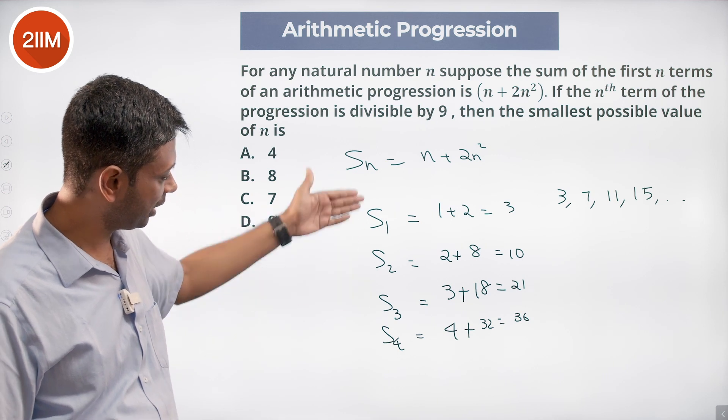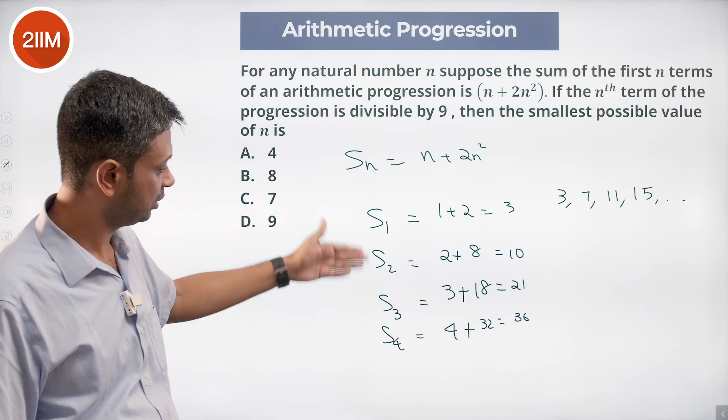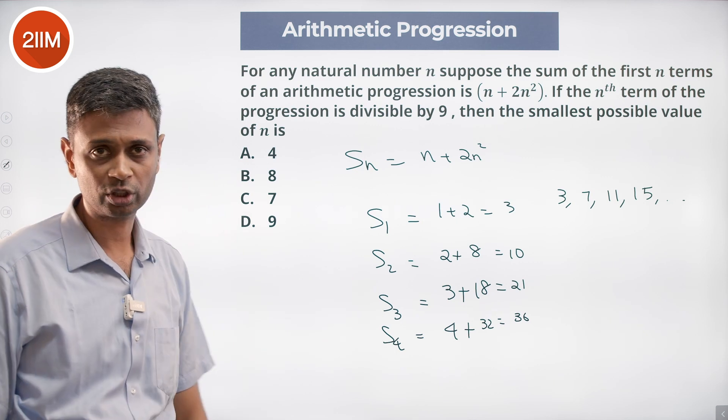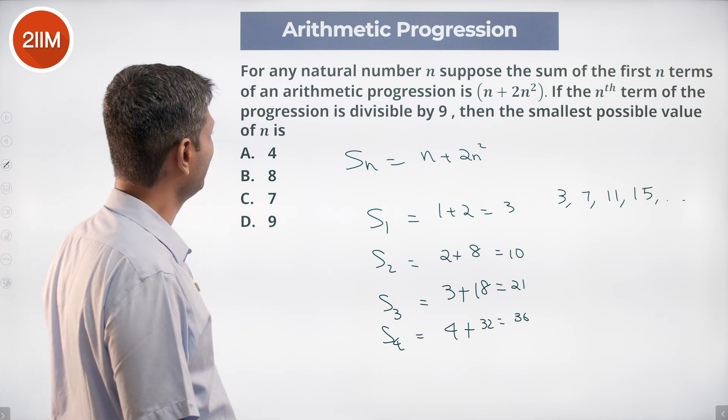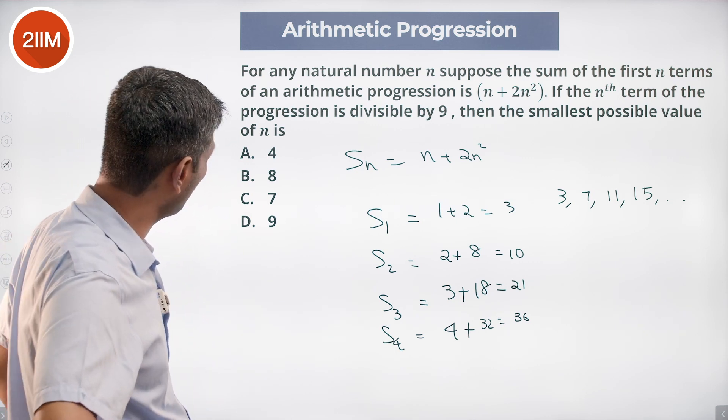The first term is the sum up to 1 term. The second term is S_2 minus S_1. The third term is S_3 minus S_2. The fourth term is S_4 minus S_3. So we've got our sequence.